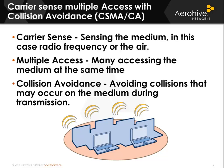Carrier sense multiple access with collision avoidance is used by 802.11 since you cannot detect a wireless collision. Carrier sense is listening to the medium — in this case the medium would be a radio frequency or the air. Multiple access means that many client devices or many access points could be accessing the medium at the same time. Collision avoidance means avoiding collisions that may occur on the medium during transmission.